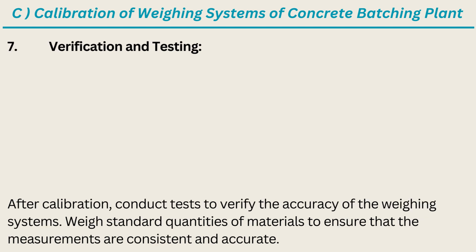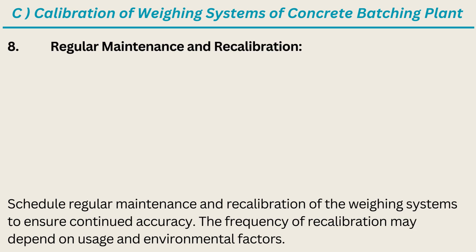Step 7: Verification and Testing. After calibration, conduct tests to verify the accuracy of the weighing systems. Weigh standard quantities of materials to ensure that the measurements are consistent and accurate. Step 8: Regular Maintenance and Recalibration. Schedule regular maintenance and recalibration of the weighing systems to ensure continued accuracy. The frequency of recalibration may depend on usage and environmental factors.